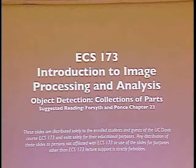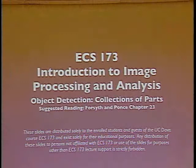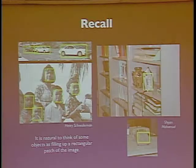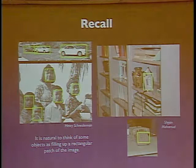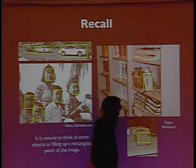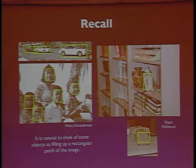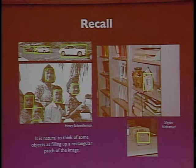So last time, if you recall, we talked about how one might go about detecting objects in photographs if you can make the assumption that the objects you're looking for are nicely represented in terms of rectangular patches of pixels in the image. As you can probably guess, today we're going to talk about what to do when that's not true. Last time, I gave you a general recipe for computational steps and design choices you have to make if you are going to detect things like faces, cars, irons, or telephones in images.